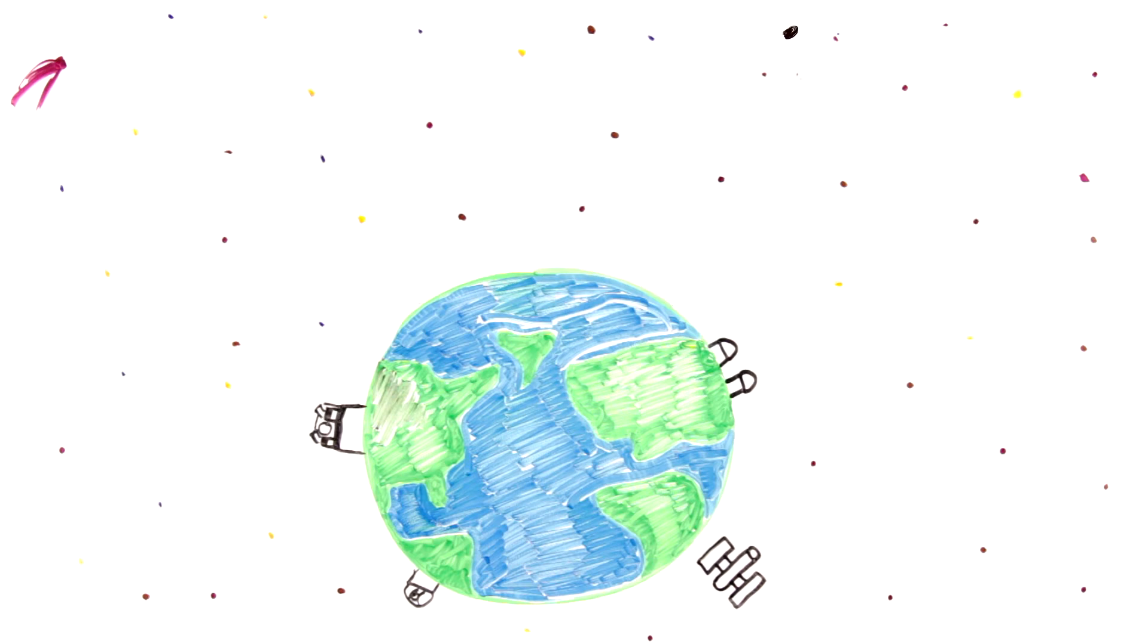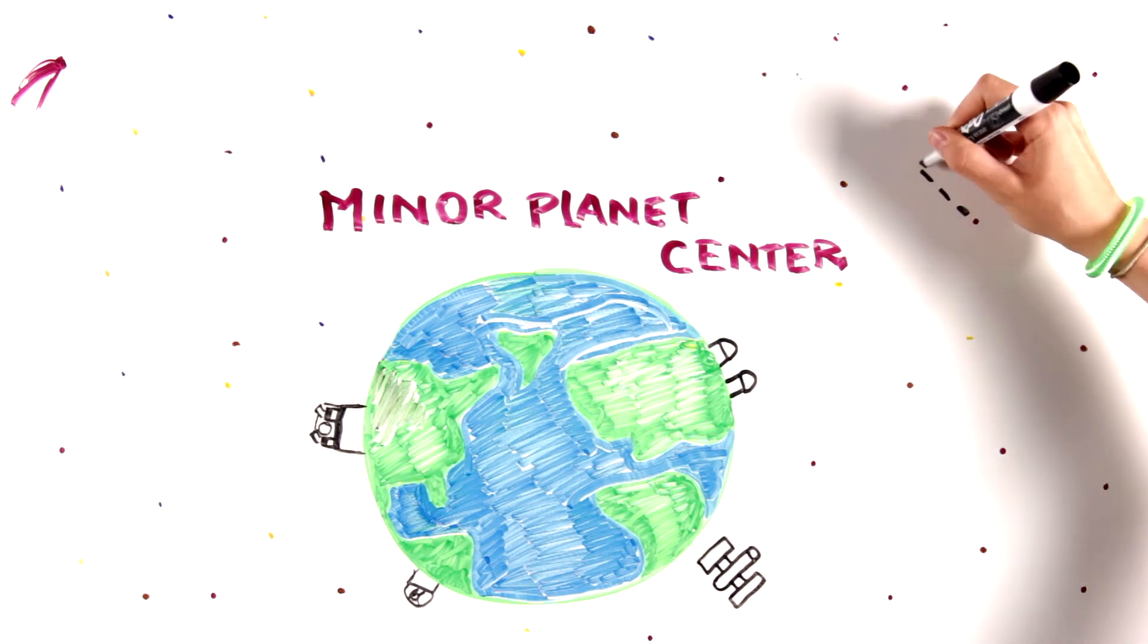When they find a near-Earth object, they send its information to the Minor Planet Center, which keeps track of its orbit.